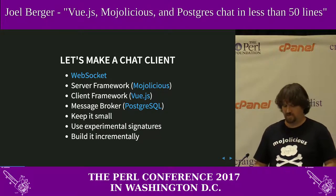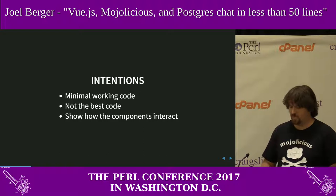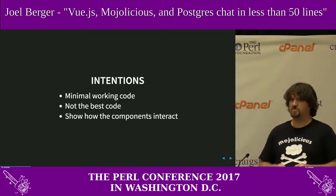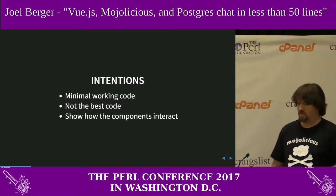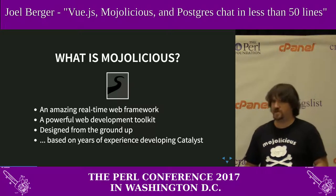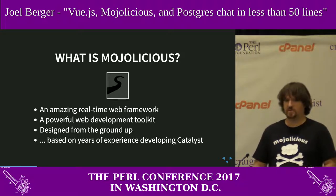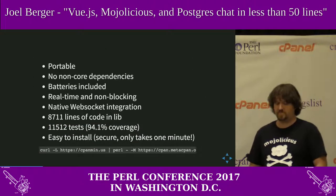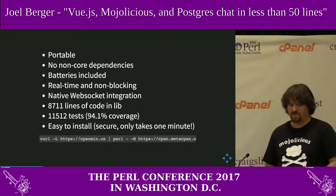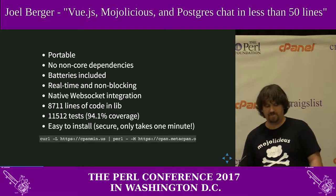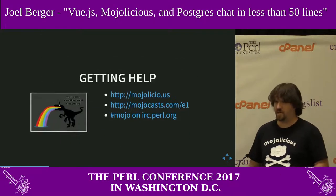I'm going to use experimental signatures to keep it small, and we're going to start simply and build it up. The intention is minimal working code — it's not always the best code; I don't check errors, but this shows how the components interact, not how you'd write production code. Most of you probably know Mojolicious — it's a web framework based on knowledge from Catalyst but new and shinier. Updated stats: 8,711 lines of code, 11,512 tests, and 94% test coverage.